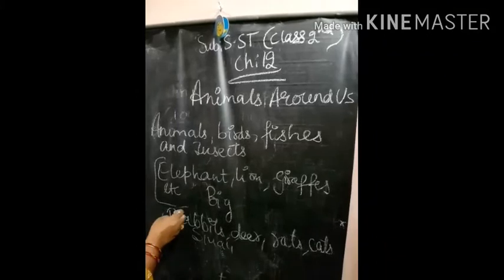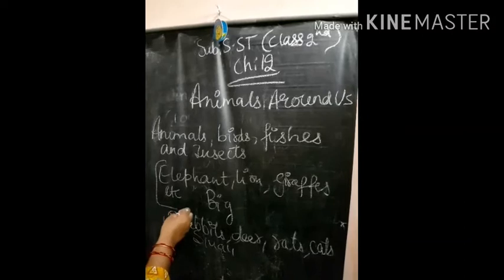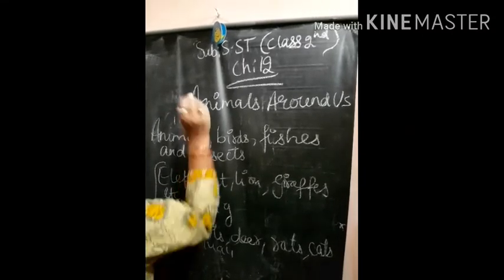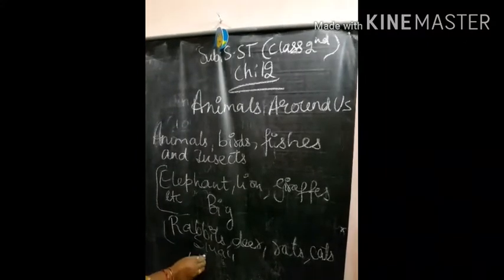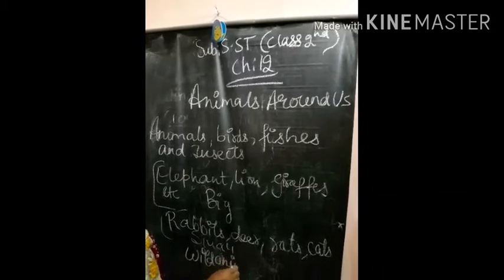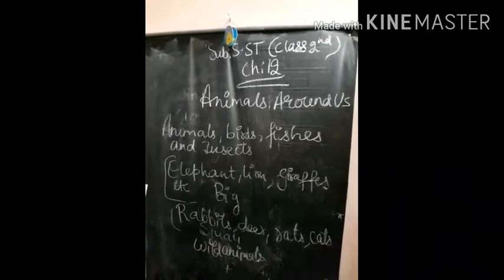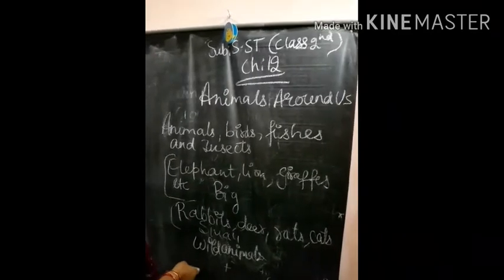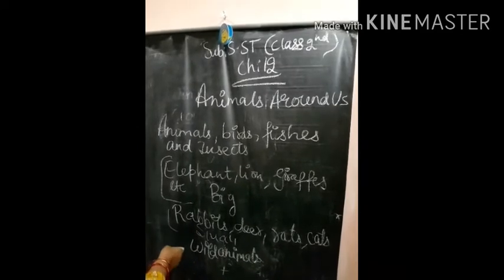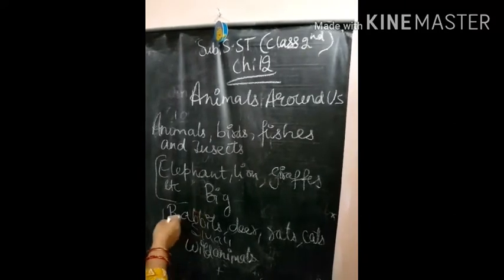There are different types of animals. Animals that live in a forest are called wild animals. Wild animals are elephant, lion, giraffe, tiger, etc.